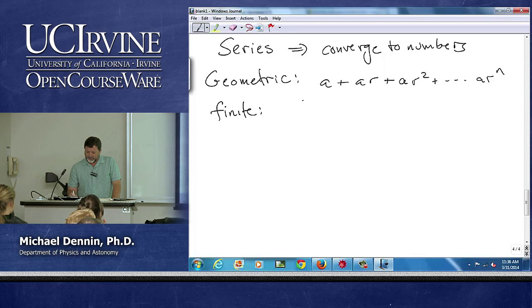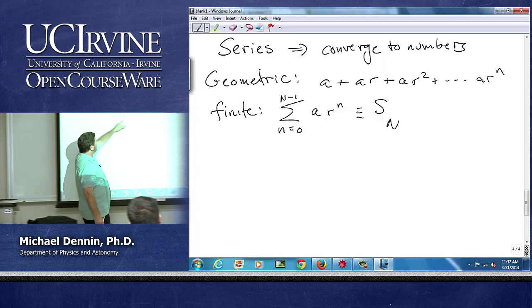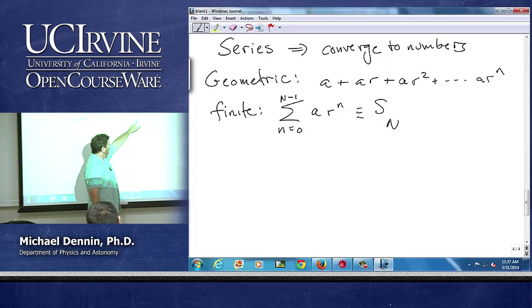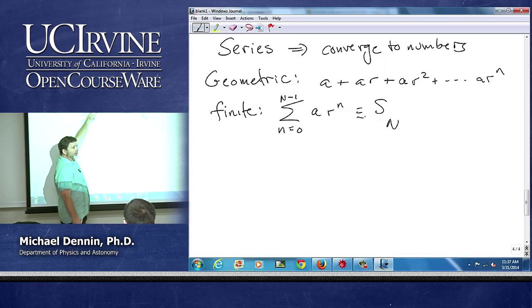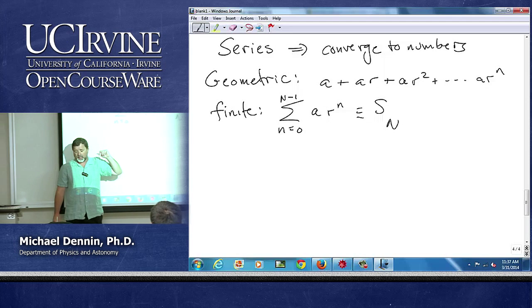There is the finite version, which is the sum from N equals zero to capital N minus one of AR to the N, defined to be S sub N. Notice since I started at zero to get capital N terms, I go to N minus one because I'm not starting at one.